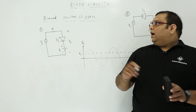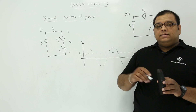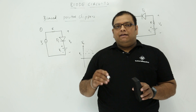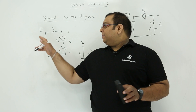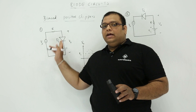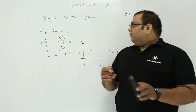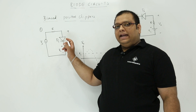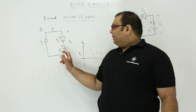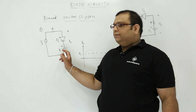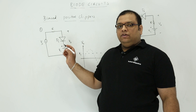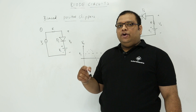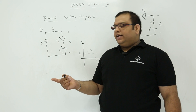Now let us discuss biased positive clippers. Here we will have a voltage supply also in the circuit. If you observe the circuit carefully, we have a diode and at the negative side we applied V1 voltage. We will verify two conditions: when the diode is conducting and when the diode is not conducting.